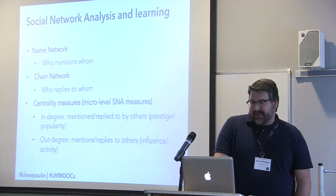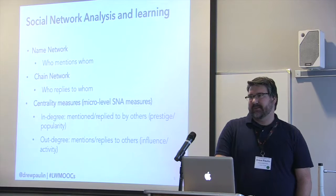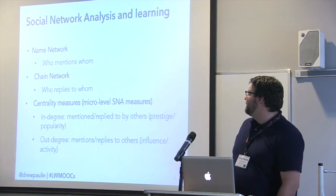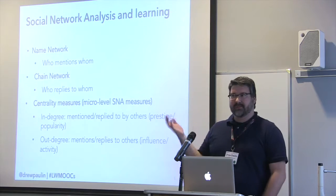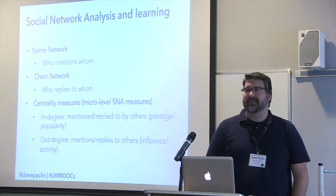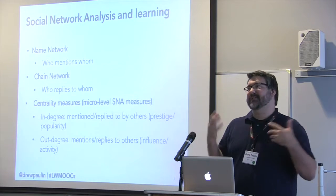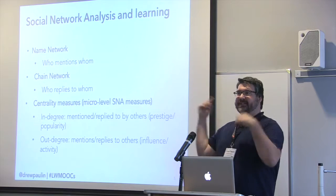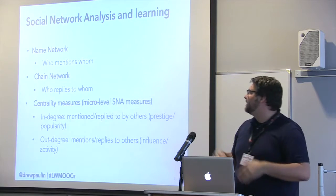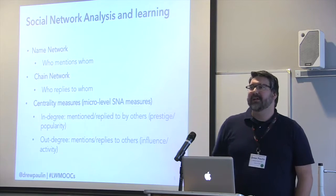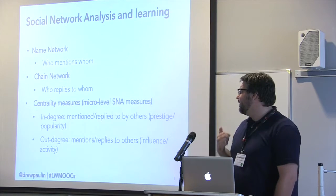To understand networks that emerge in discussions, we use two types of networks. The first is a name network — who mentions whom, looking for actual names. The second is chain networks — who replies to whom. So nodes are the users, and these are the two ways nodes are connected: who mentions whom in the name network, and who replies to whom in the chain network.